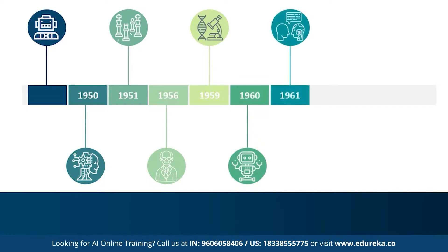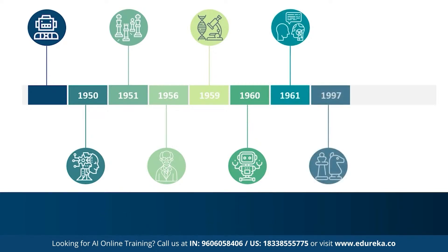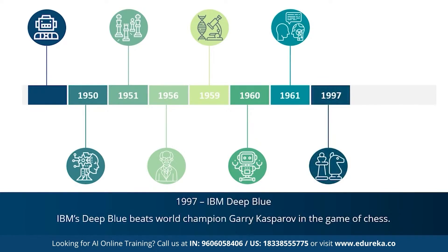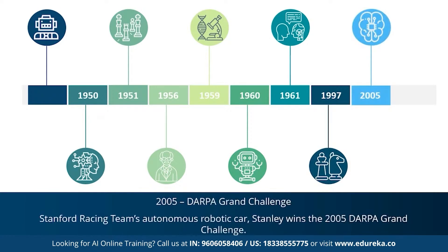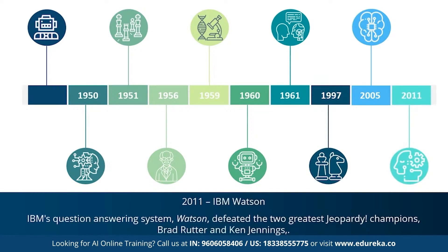In 1961, the first AI chatbot called Eliza was introduced. In 1997, IBM's Deep Blue beat the world champion Garry Kasparov in the game of chess. 2005 marks the year when an autonomous robotic car called Stanley won the DARPA Grand Challenge. In 2011, IBM's question answering machine Watson defeated the two greatest Jeopardy champions, Brad Rutter and Ken Jennings. So that was a brief history of AI.